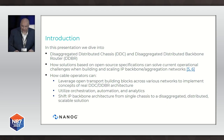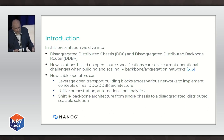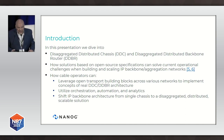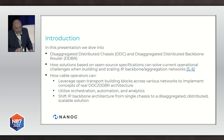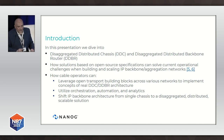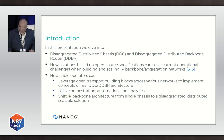In this presentation, we'll dive into disaggregated distributed chassis (DDC) and disaggregated distributed backbone router (DDBR), and how these open source specs can solve operational challenges when building and scaling your IP network. Cable operators can leverage these building blocks and implement real-time concepts of the DDC and DDBR architecture. One of the main important points is that you'll have to utilize orchestration, automation, and analytics — that's going to be table stakes. We'll also discuss how to shift the IP backbone architecture from a single chassis to a disaggregated distributed scalable solution, and how to overcome operational challenges and pitfall considerations.